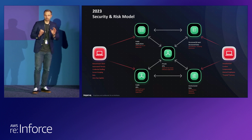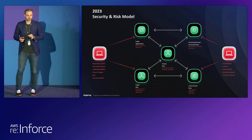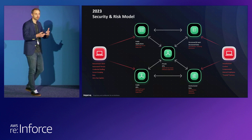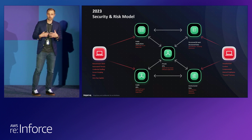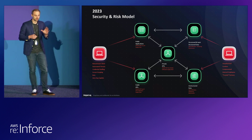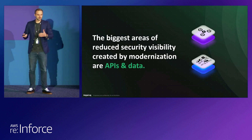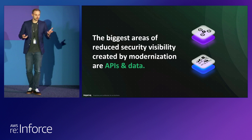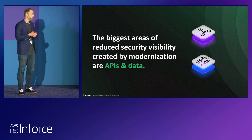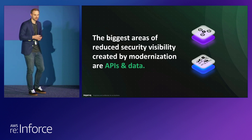Within your applications, you still have to deal with those traditional web application attacks and supply chain vulnerabilities. But on your APIs, there's a whole different subset of attack vectors — and that's what we're focusing on today. As you move further back into your organization, your threat model changes from external attackers to more internal threats: malicious, careless, and compromised users. Those are the major threats to your data stores. The biggest areas of risk for organizations come from modernization — specifically your APIs and your data.